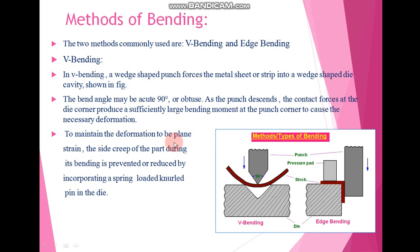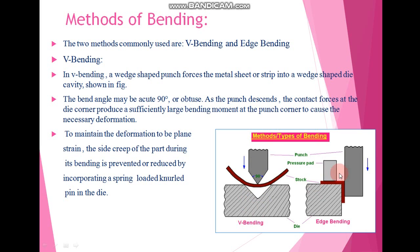Now let us talk about the methods of bending. Basically there are two types of bending methods. The first one is V-bending and the second one is edge bending. This diagram represents V-bending and this diagram represents edge bending.